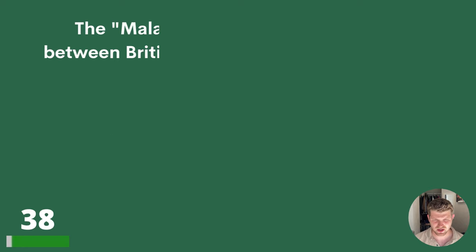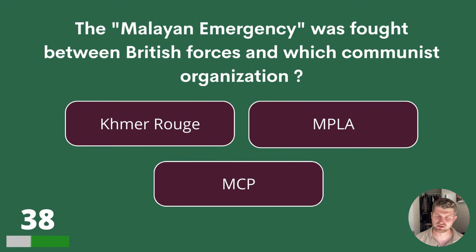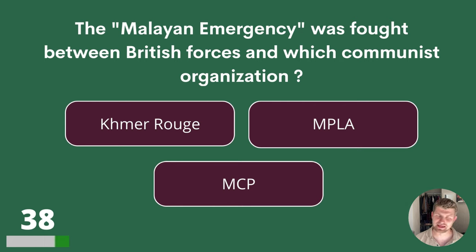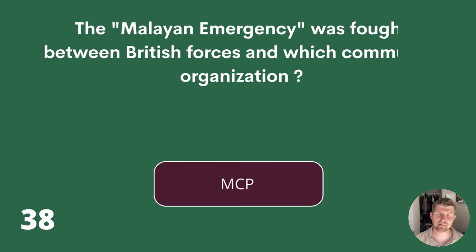Question 38. The Malayan Emergency was fought between British forces and which communist organisation? Khmer Rouge, MPLA or MCP? The answer is MCP.